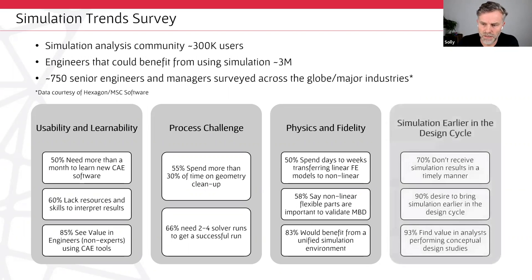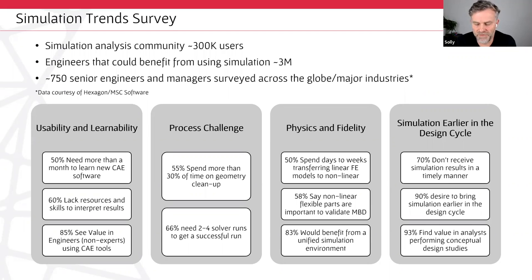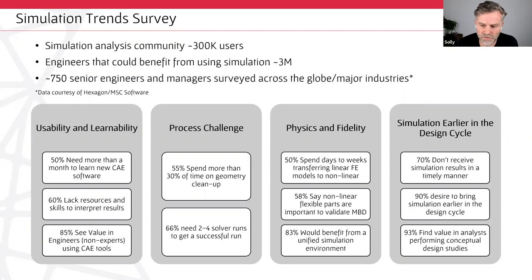A major finding — and I see this massively in aircraft development — is that people spend so long building, running, and verifying analyses that it's almost too late to change the design. FEA becomes just a verification activity for designs already sent for manufacture. If you can get simulation earlier in the design cycle, you get better products more quickly, with less downstream risk.